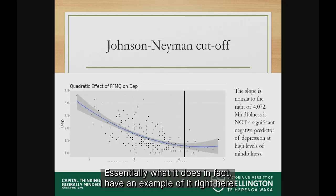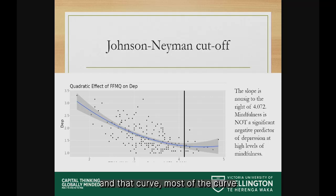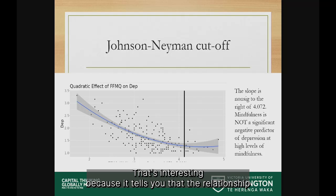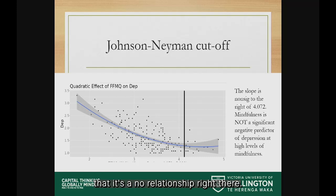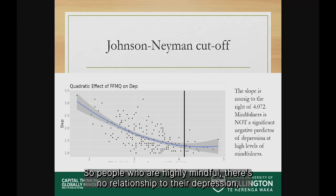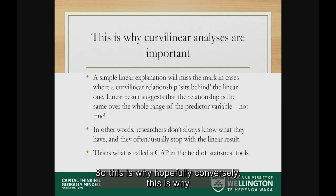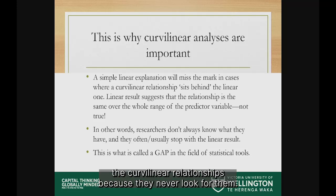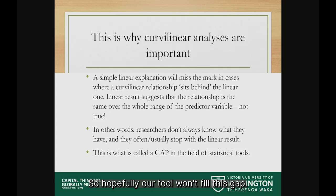What the Johnson-Neyman test does is tell you the point at which the slope is flat in that curve. Most of the curve has steepness to it — that negative relationship — but at some point it becomes flat. That tells you that the relationship between mindfulness and depression doesn't exist at that point; it's a null relationship. People who are highly mindful show no relationship to their depression, which is very important. Most people miss curvilinear relationships because they never look for them, and they don't look because they don't have a good tool. We have a good tool.